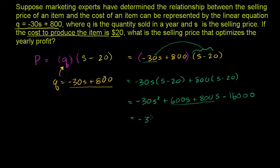We get negative 30S squared plus 1400S minus 16,000. So we've now expressed our profit as a function of selling price. And this is actually going to be a downward opening parabola. And we can tell that because the coefficient on the second degree term, on the quadratic term, is negative.